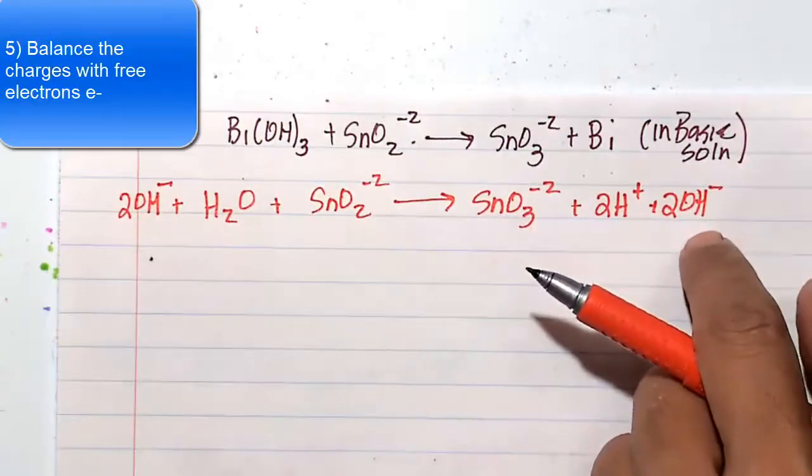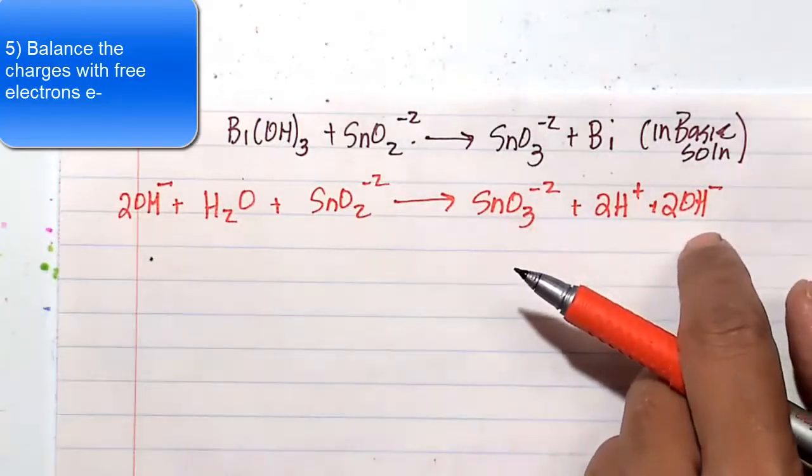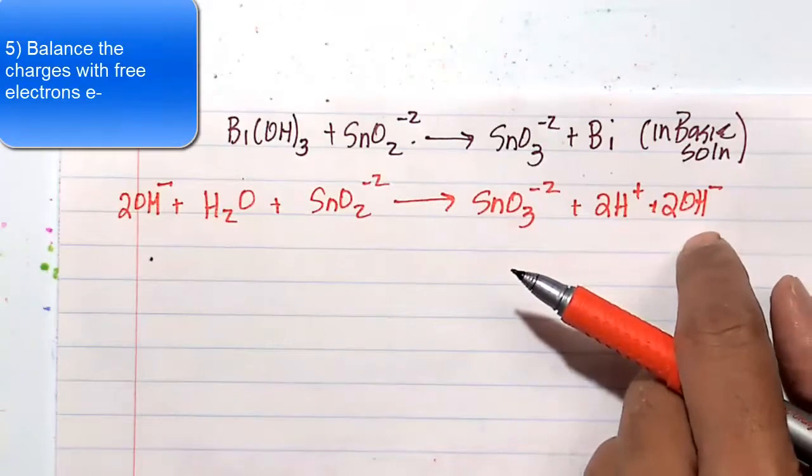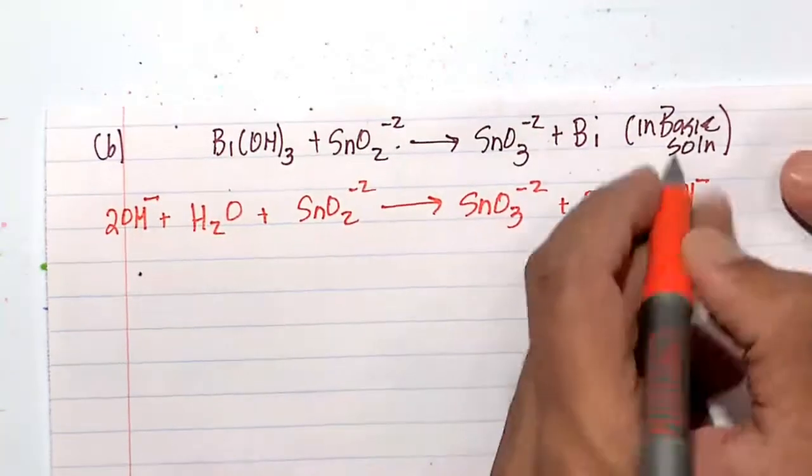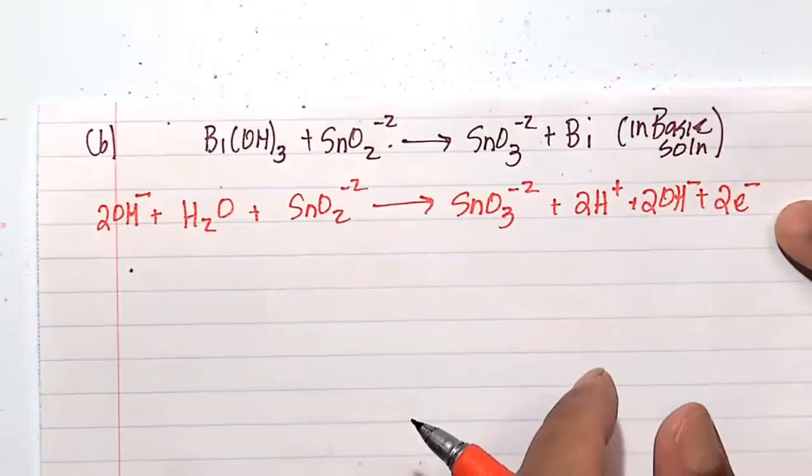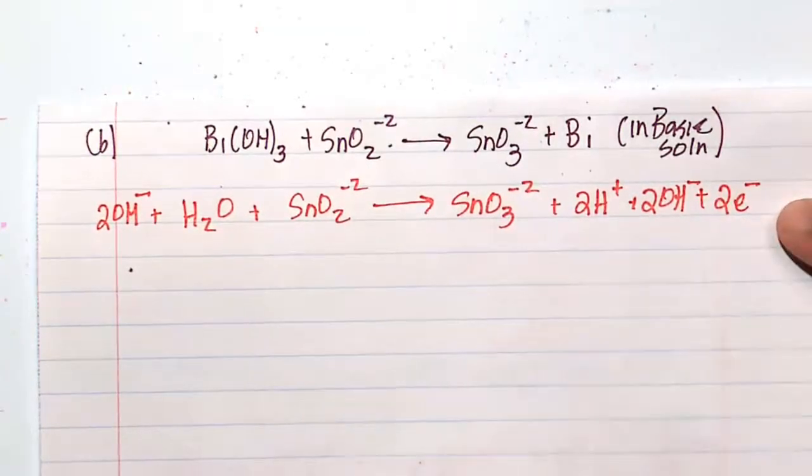So to balance the charge in terms of electrons, I'm going to put two, is it two electrons? Yes, I'm going to put two electrons here. This is an oxidation half reaction. We lose two electrons.